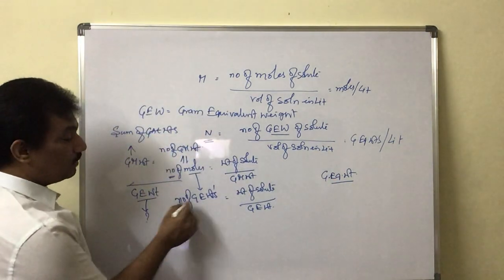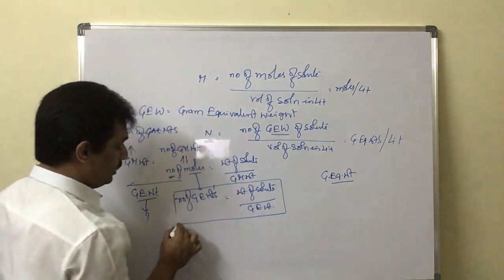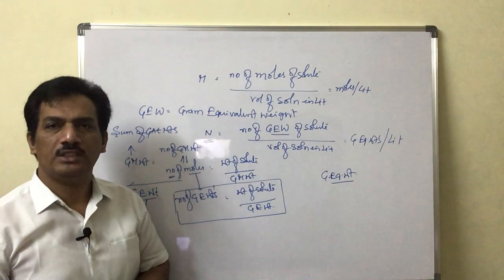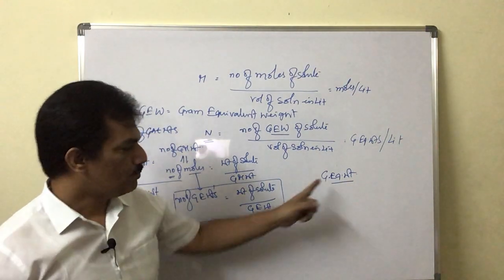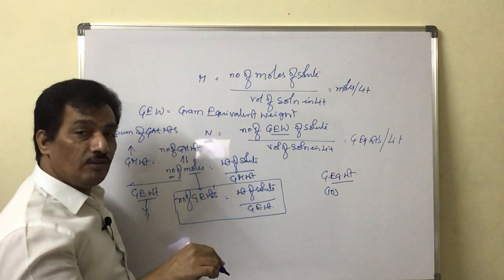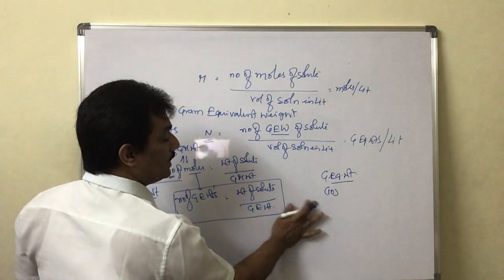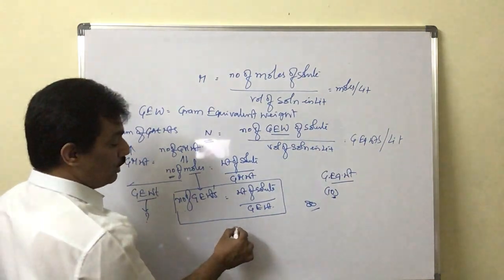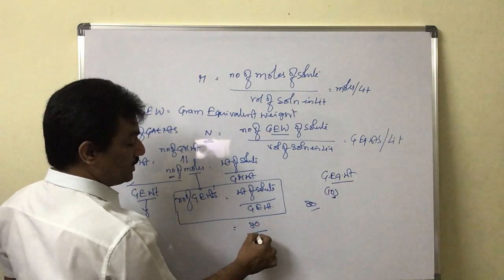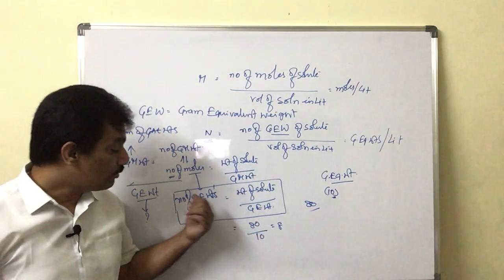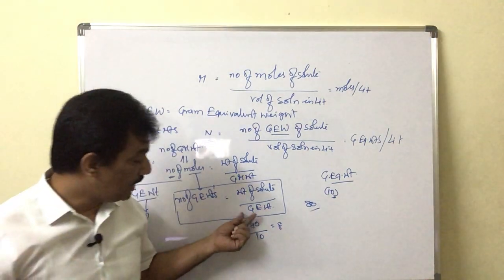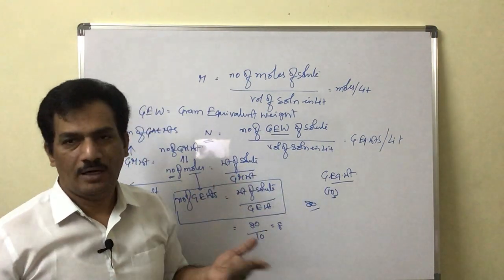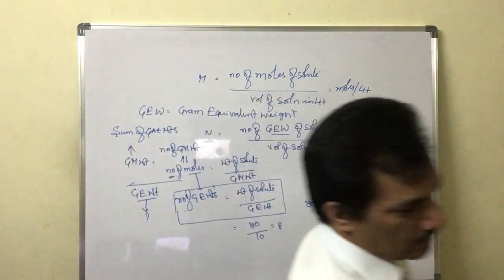Just remember: gram equivalent weight is different from number of gram equivalent weights — so many students are confused. For example, if a compound has gram equivalent weight of 10, and 80 grams of that substance are given, then number of gram equivalent weights = 80 divided by 10 = 8. That is how number of gram equivalent weights is calculated.